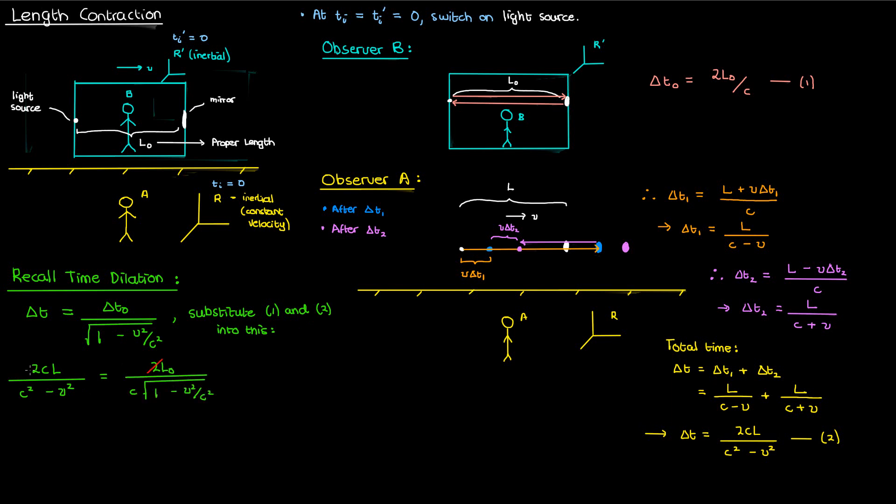We can cancel the twos to end up with the following, and then we can square both sides and isolate the L to end up with L equals L0 times the square root of 1 minus V squared over C squared. This is the equation of length contraction.